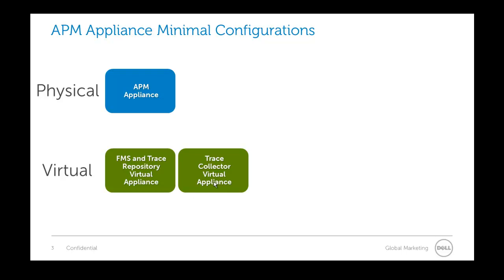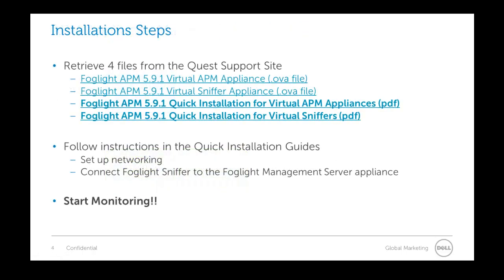What we're going to do today is look at a basic install of the minimal configuration for the virtual setting, on one web server. To get started, retrieve four files from the support site. The first is the virtual APM appliance, which contains your Foglight server and archiver. The second is the virtual sniffer appliance, which contains the trace collector. Make sure you get these two files and the accompanying install guides.